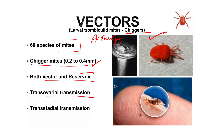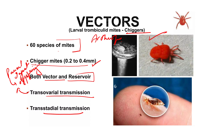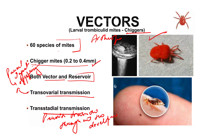Trans-ovarial transmission means that if the parent mite is infected, it will transfer the infection to its offspring. Trans-stadial transmission refers to the parasite being transmitted across different life stages of the arthropod.